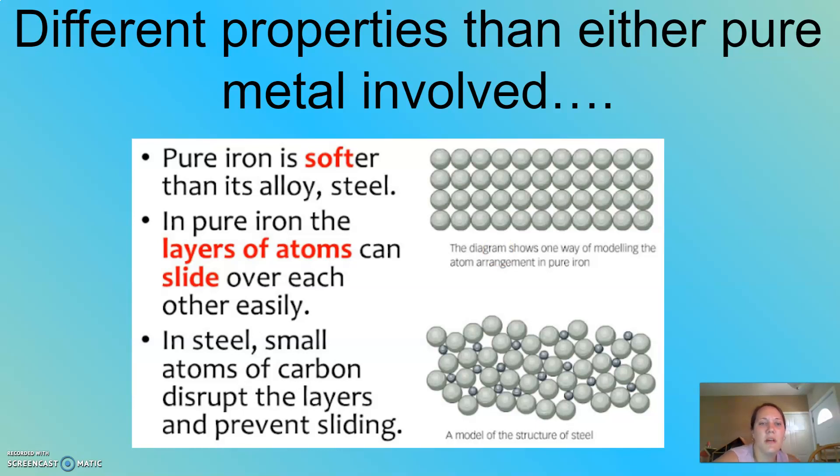In pure iron, the atoms can slide over each other easier because of the organization, like the top picture here. These would be like just rolling over each other very easily. Once we put them together in their alloy form, where we add in carbon atoms, which are these smaller atoms, we now see that they're not as organized. And so there's not as much rolling over each other that can be done here as in this top picture.